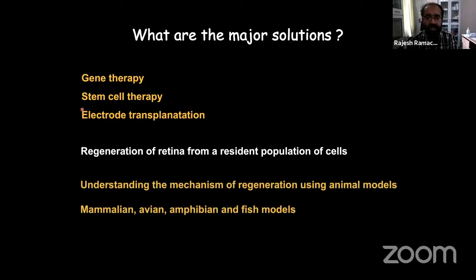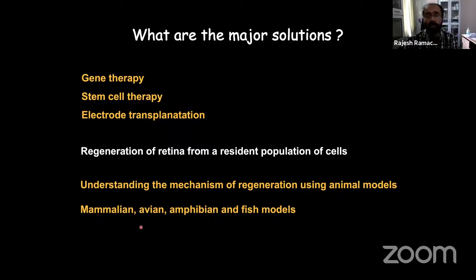One must understand the mechanism of regeneration using animal models, since research cannot be done using humans. We use mammalian, avian, amphibian, and fish models. Mammalian and avian models are limited to embryonic or early post-embryonic stages, whereas amphibians and fish models have extreme capability of regenerating almost any organ in their body.